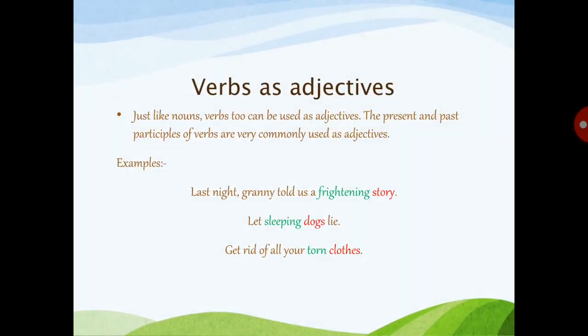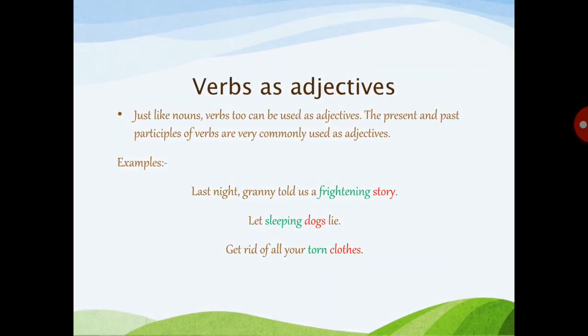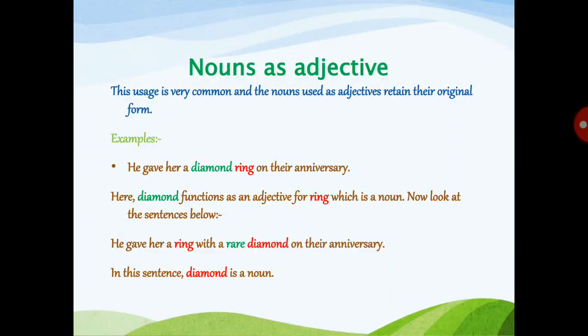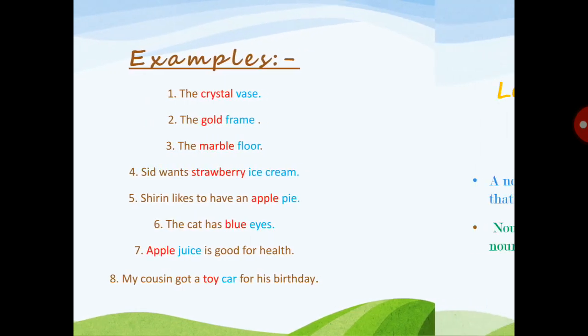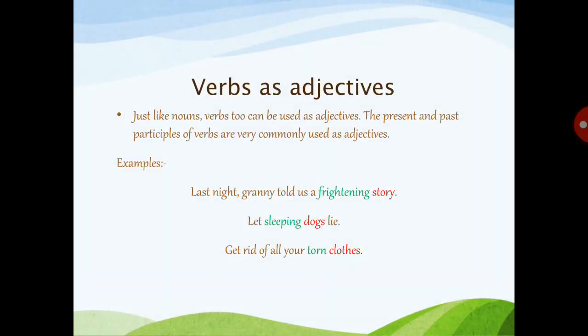Now let's look at the next topic: verbs as adjectives. Just like nouns, verbs too can be used as adjectives. There are two kinds: the present participle and past participle of verbs are very commonly used as adjectives. The present participle form (verb form ending in -ing) and the past participle form (verb form three, ending in -ed or -en) both commonly act as adjectives.